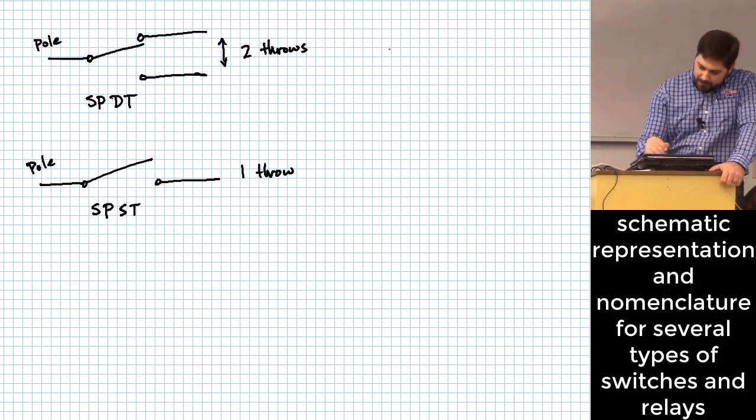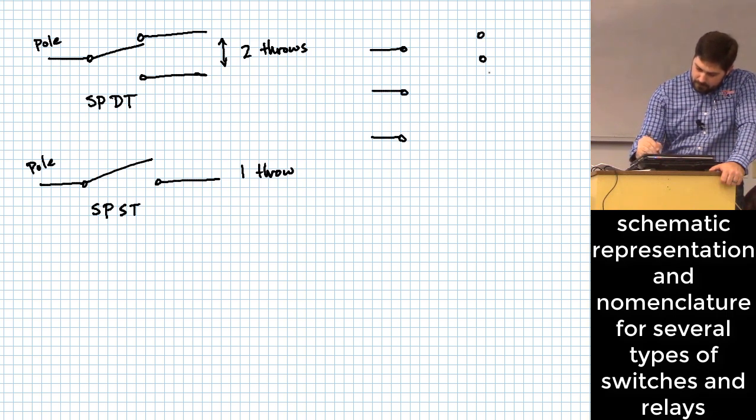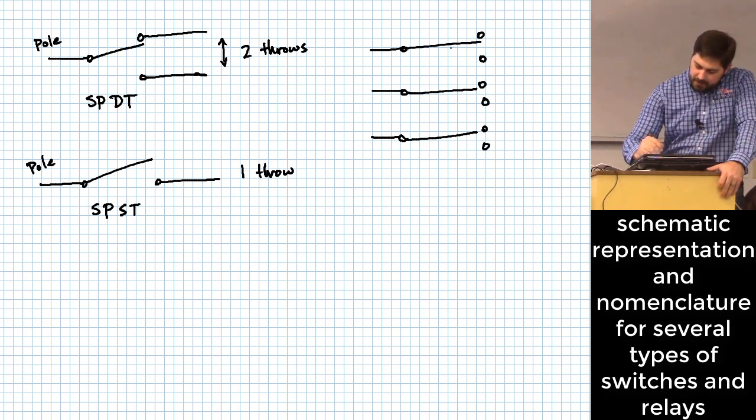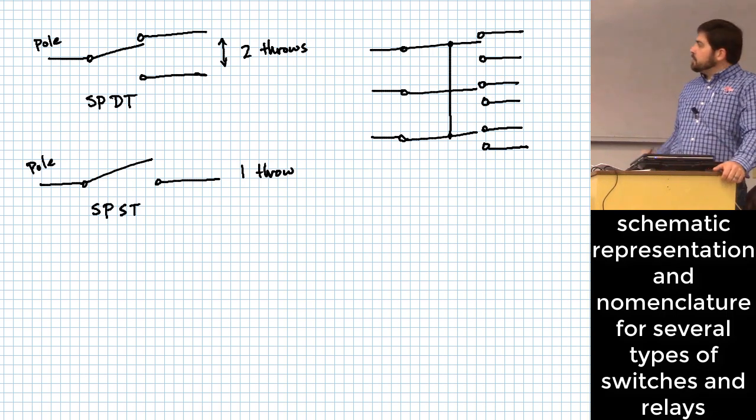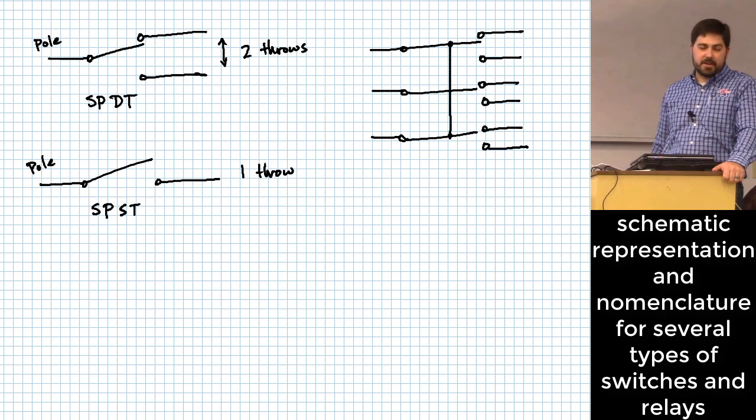So let's do one that's more complicated. A lot of times they'll put like a little thing that looks like this on here. All that's showing you is that mechanically, all of these choices are linked. It does not mean that they are electrically linked. So a switch that looks like that, what's that called?